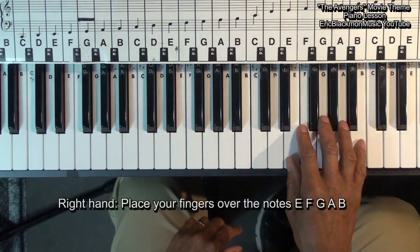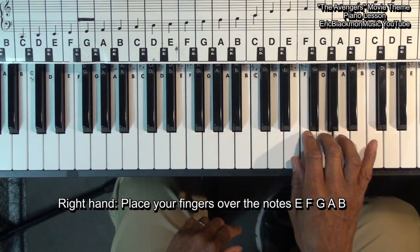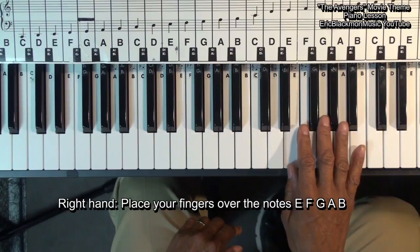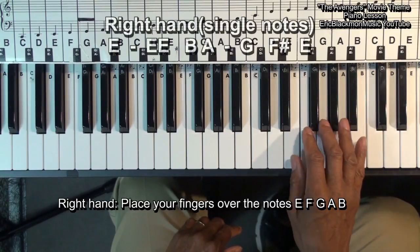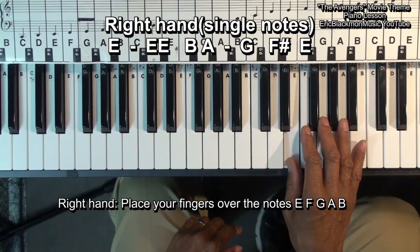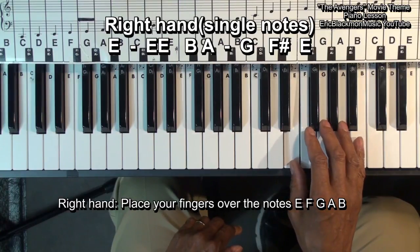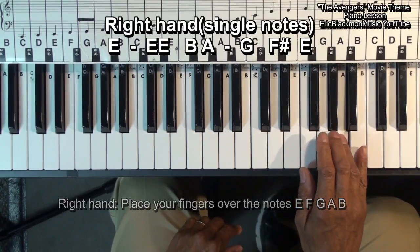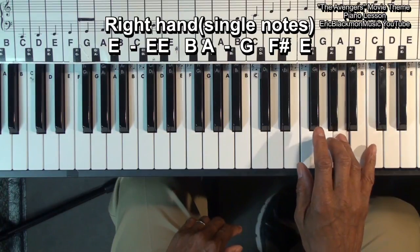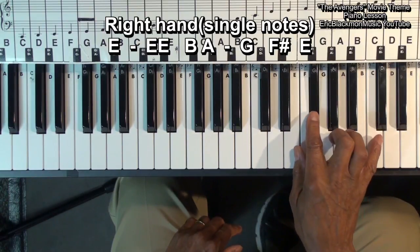On the right hand, we're going to set up an E position like this. And we're going to play E, E, two more E's, B, A, G, F sharp, E.